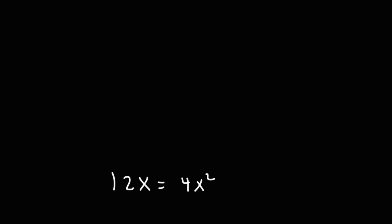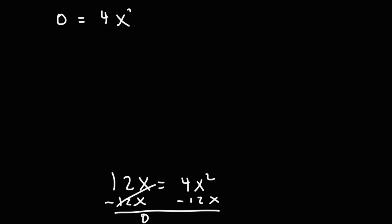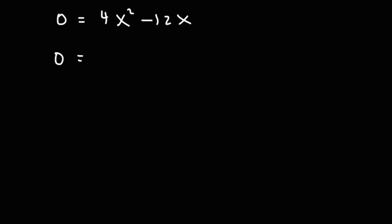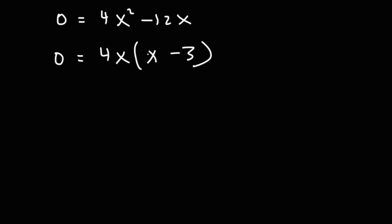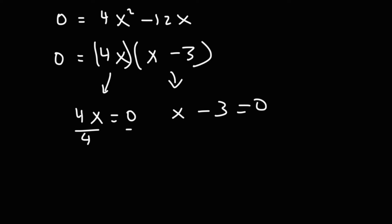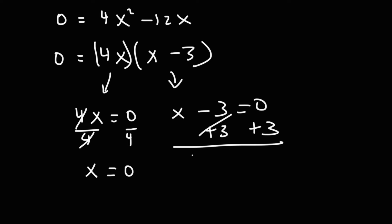I don't recommend dividing both sides by 4x because you'll lose a solution. Instead, subtract both sides by 12x. On the left we'll have 0; on the right, 4x squared minus 12x. Now we factor out the GCF, which is 4x. 4x squared divided by 4x is x, and negative 12x divided by 4x is negative 3. Using the zero product property, 4x equals 0 gives x equals 0, and x minus 3 equals 0 gives x equals 3.